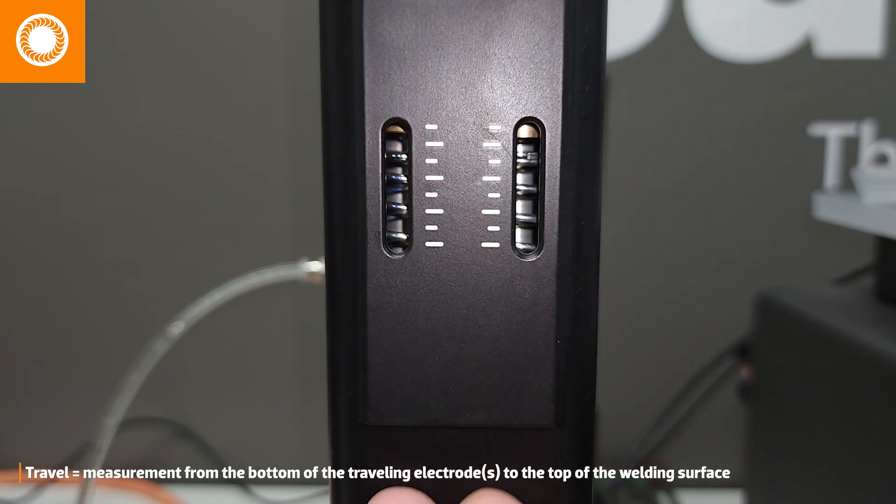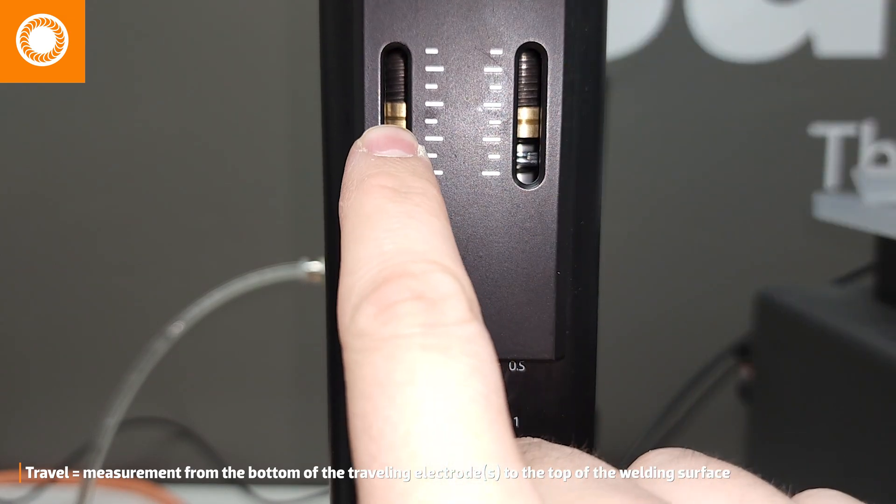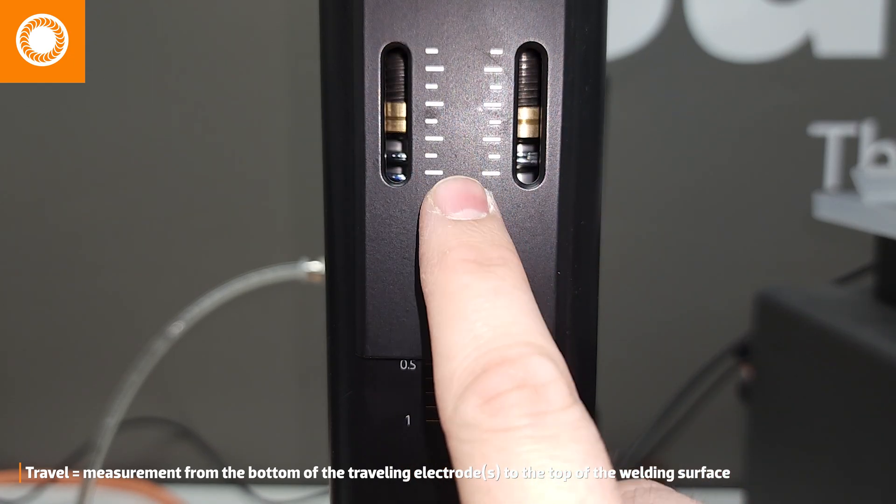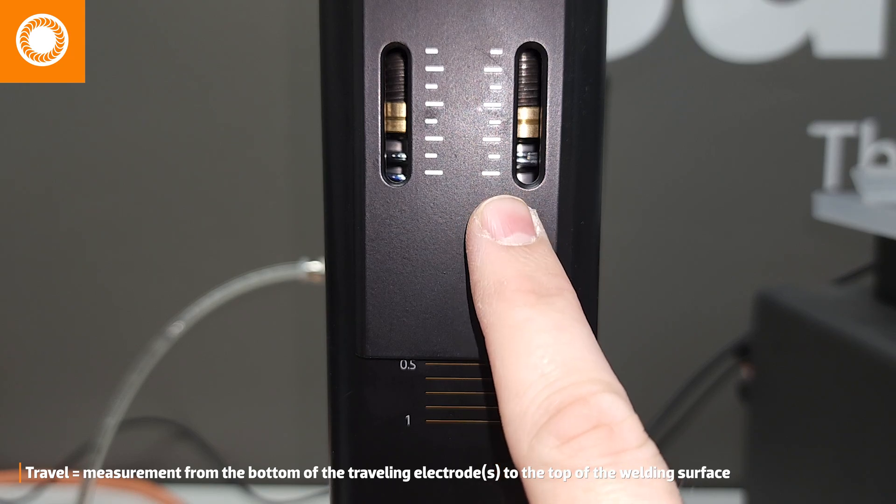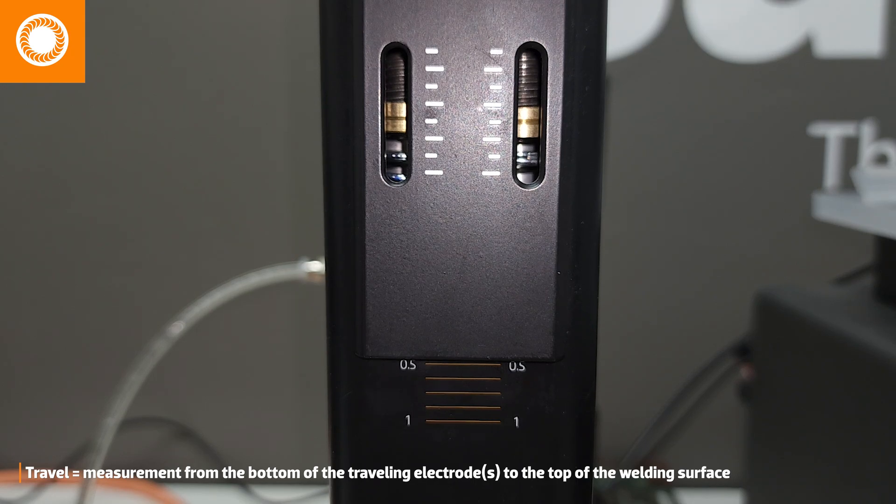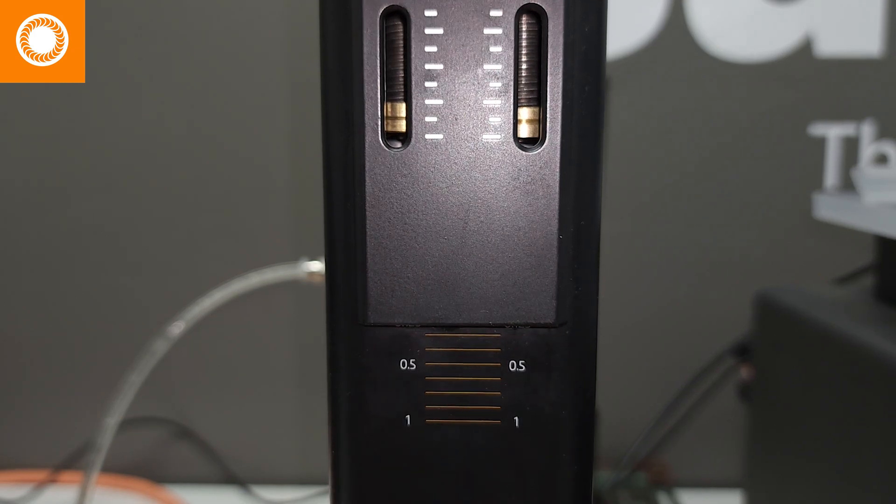You'll see that these brass indicators show me, relative to these hash marks on the faceplate, how much pressure is going to be delivered to the parts during the weld based off of how far it needs to travel. There'll be less pressure delivered if it has to travel more.